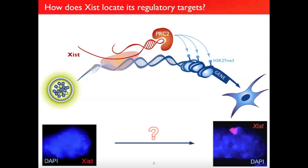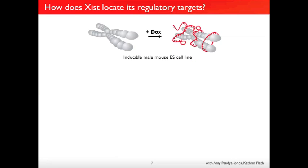Now confident that RAP was giving us the endogenous localization of a lncRNA, we turned to our next question: how does XIST actually locate its regulatory targets during the developmental stage where it's activated and spreads to form this nuclear compartment? To answer this, we used an inducible male mouse ES cell line developed by fantastic collaborators at UCLA, Catherine and Amy. In male ES cells, XIST is not expressed, but we replaced the endogenous promoter with a TET-inducible one so we can add doxycycline, activate XIST RNA expression, and watch it spread across the chromosome.